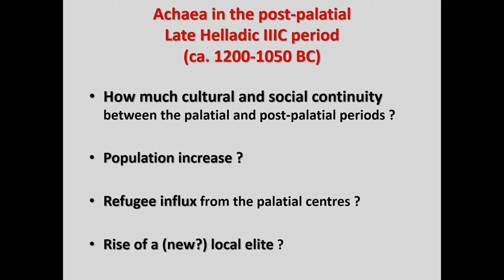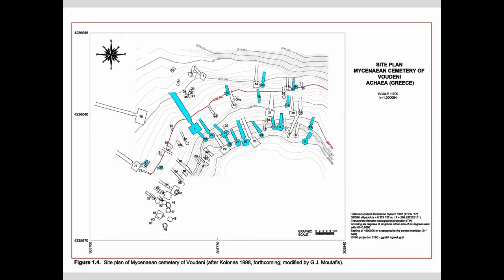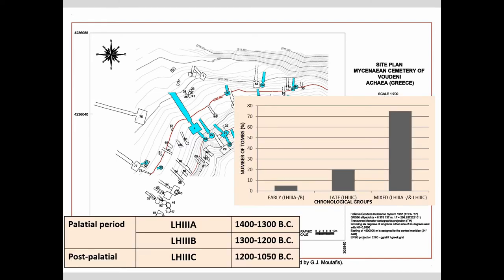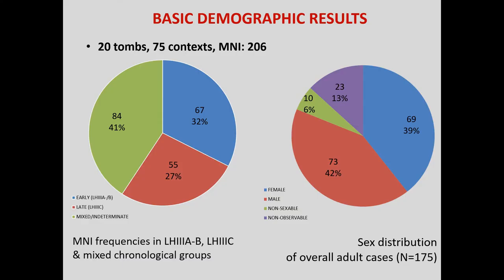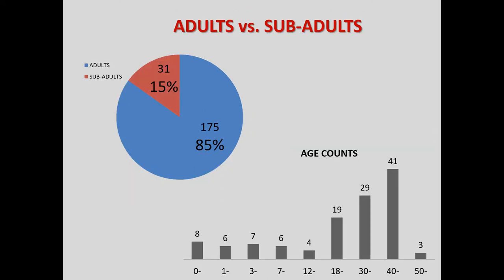Boudini is a very large cemetery in this region with over 70 rock-cut chamber tombs. The sample I worked on included 20 tombs — the ones in blue here — that span the entire Mycenaean period, with most being used in both the palatial and the post-palatial phases. The total from the 20 tombs comprised 206 people from 75 different contexts. In general, both sexes were equally represented and all ages included, with adults predominating, as is usual for this period. We will see briefly some interesting shifts between the two periods.